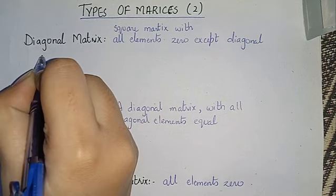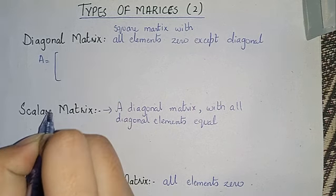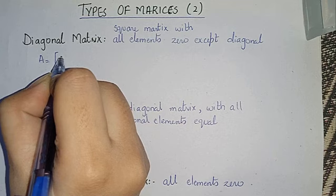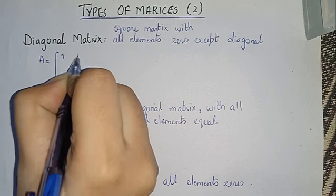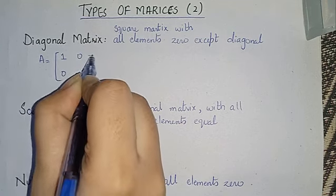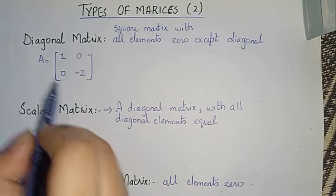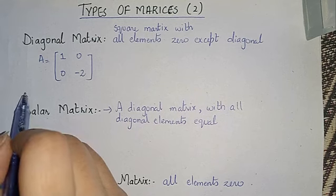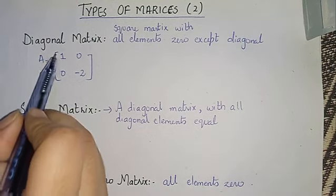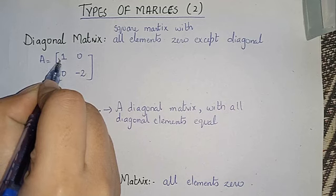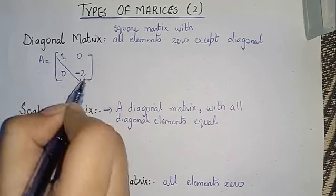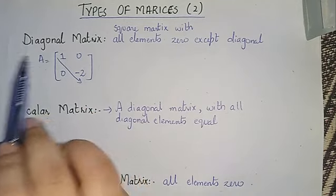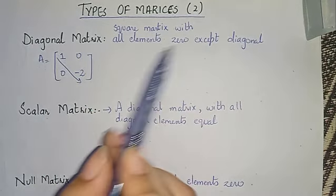Diagonal matrix — let's consider an example. First of all, it is a square matrix, meaning rows and columns are equal. For example, a 2x2 matrix: it has two rows and two columns, so rows and columns are equal, making it a square matrix. The diagonal elements are these — so this is the diagonal matrix where all elements are 0 except the diagonal.